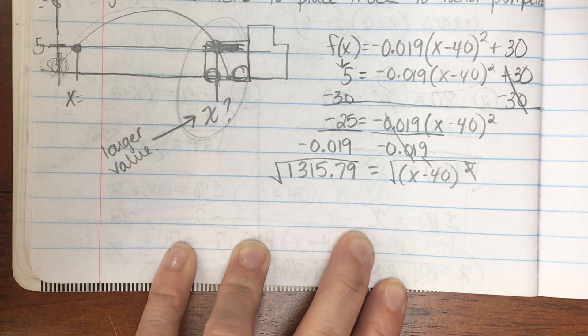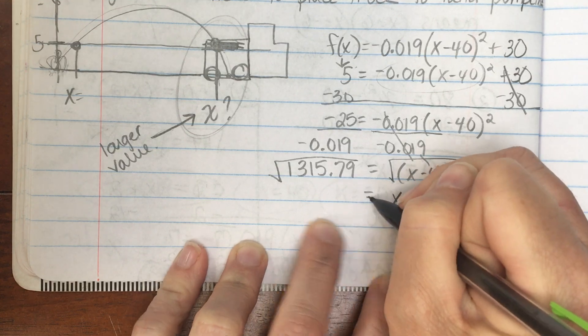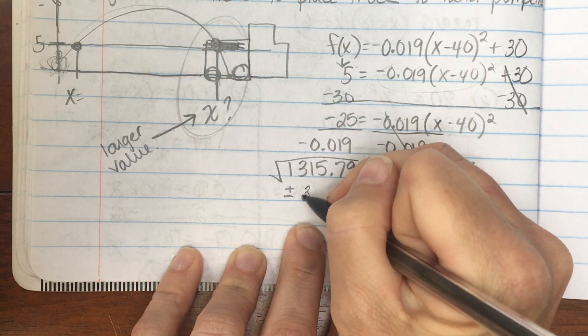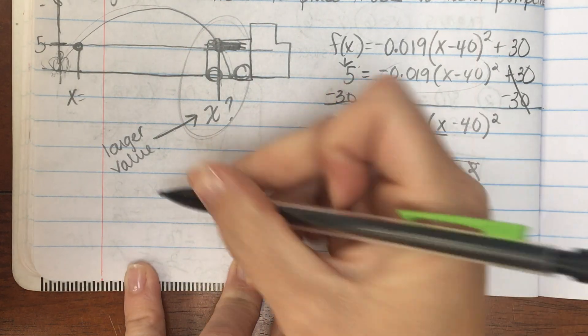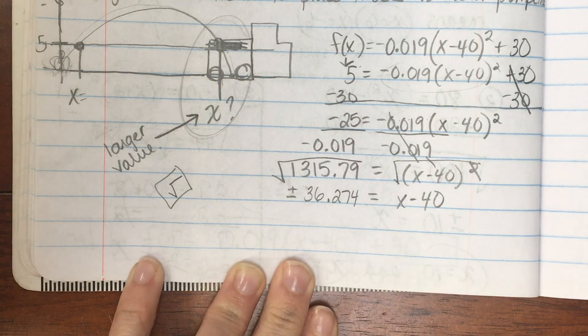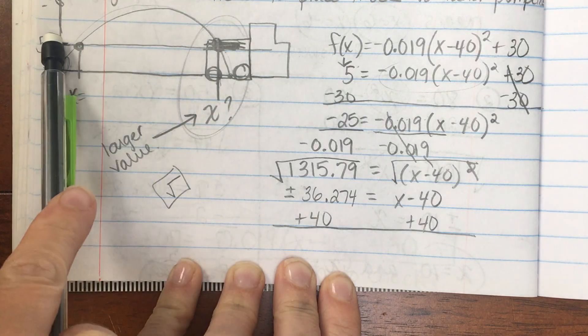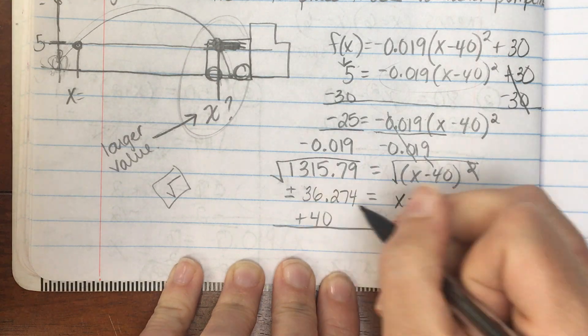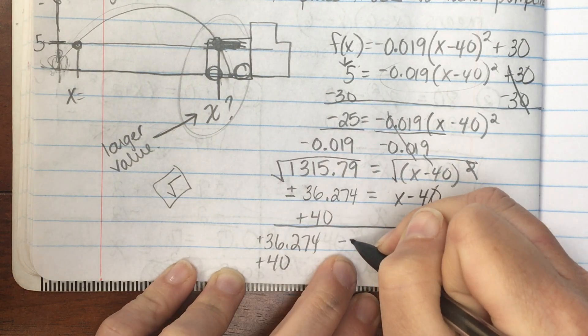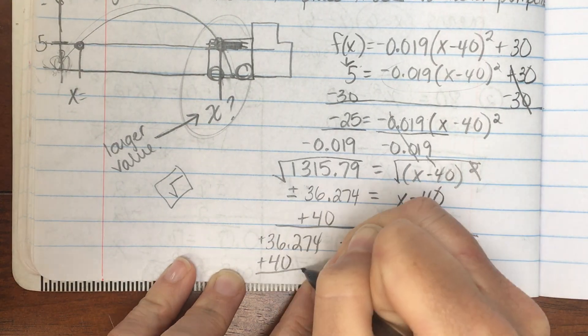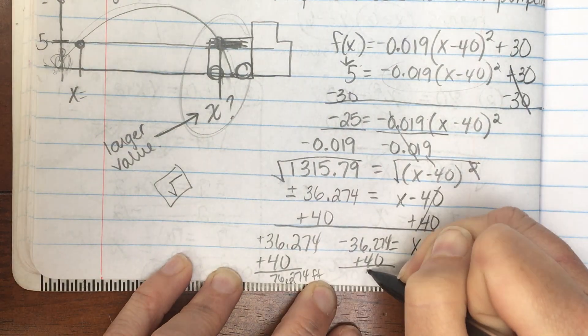So it's almost like everything on the right-hand side cancels. The plus and minus 30s canceled. The multiplying by that decimal, dividing by the decimal, canceled. The squared and the square root, cancels. X minus 40 equals plus or minus 36.274. Remember, in your calculator, you're looking for a square root button. So we have one more step. Add 40 to both sides. And remember, this is going to make sense because there's two x values when the pumpkin's at a height of 5 on its way up and then on its way down. So we get two answers. A positive 36.274 plus 40 and a negative 36.274 plus 40. So we get 76.274 feet or 33.7 feet.